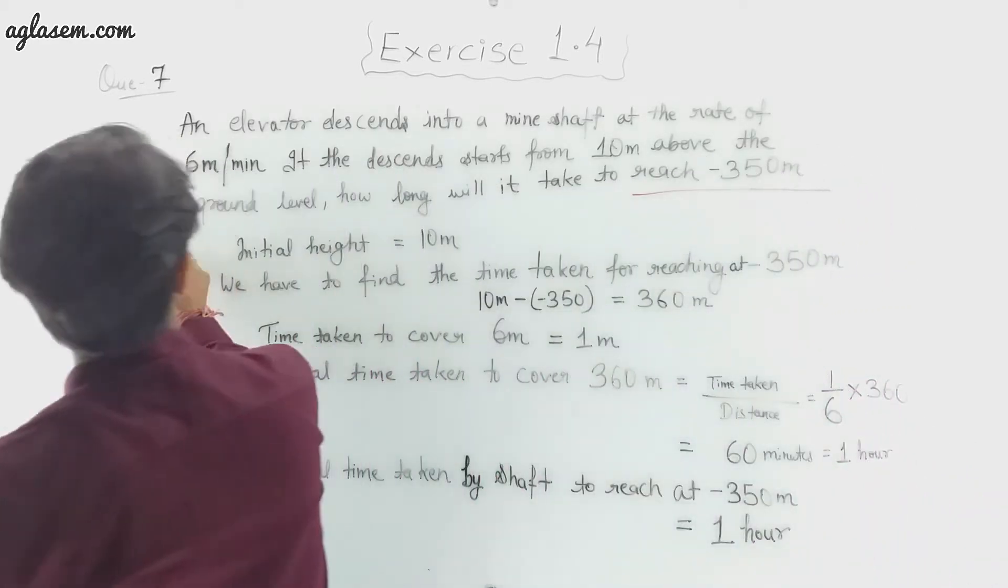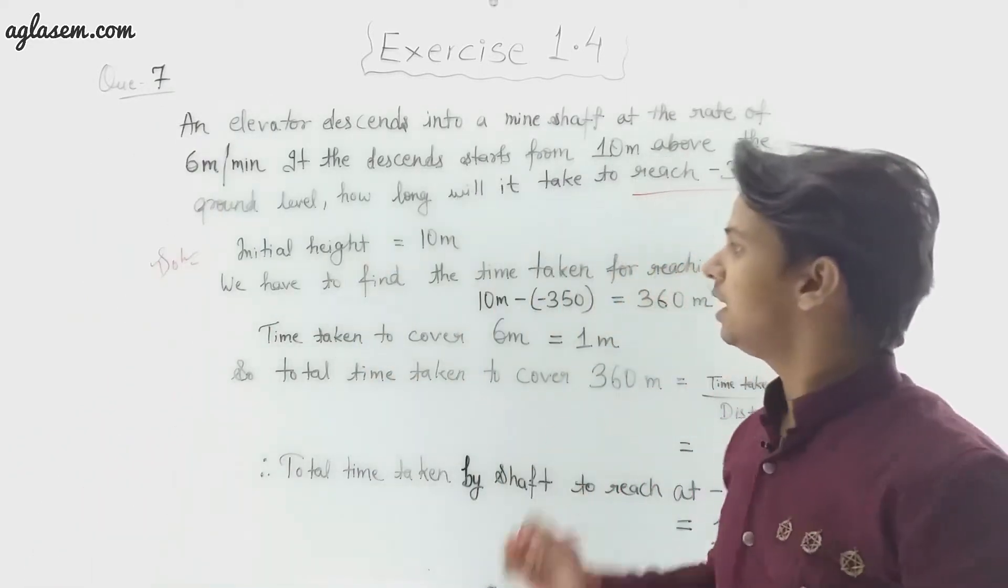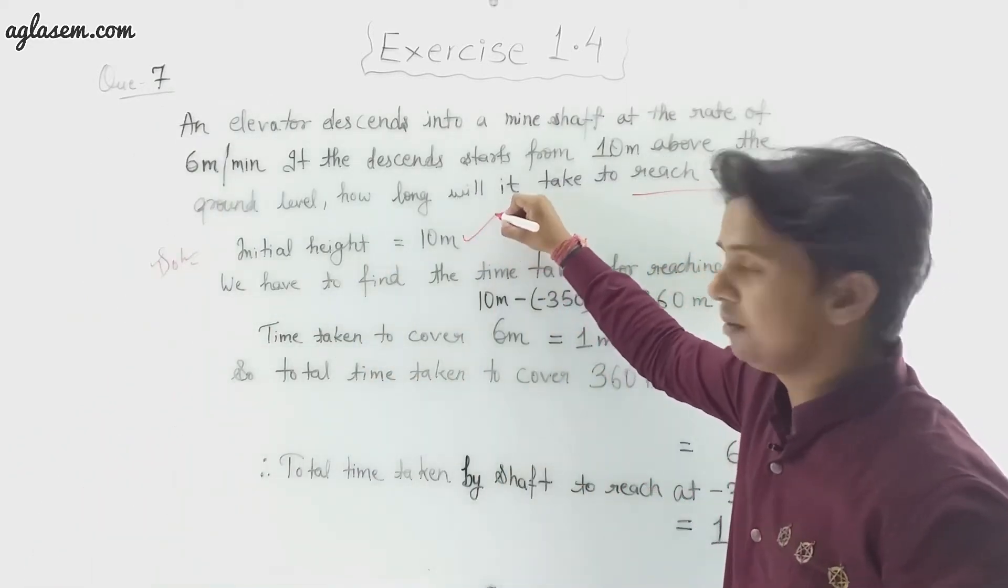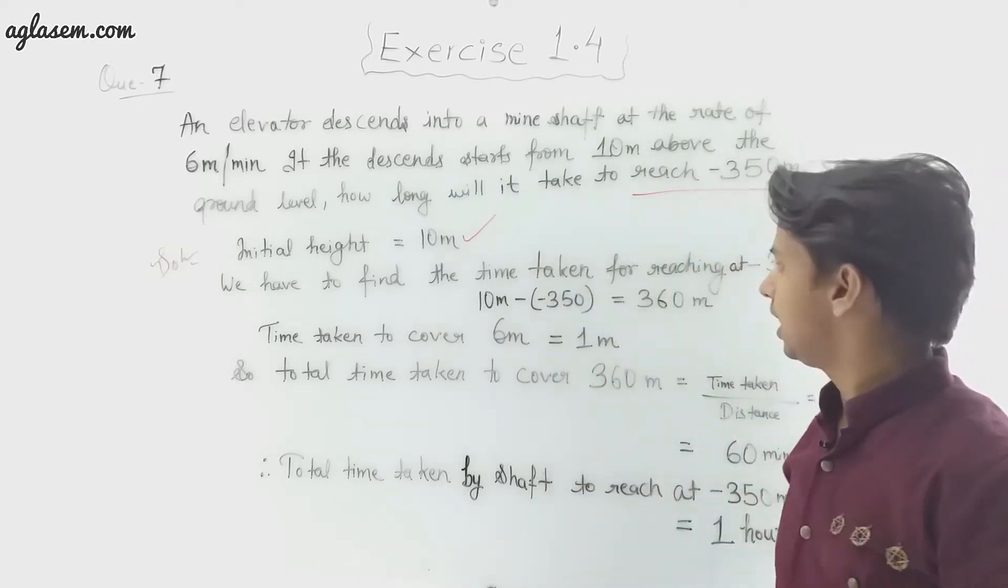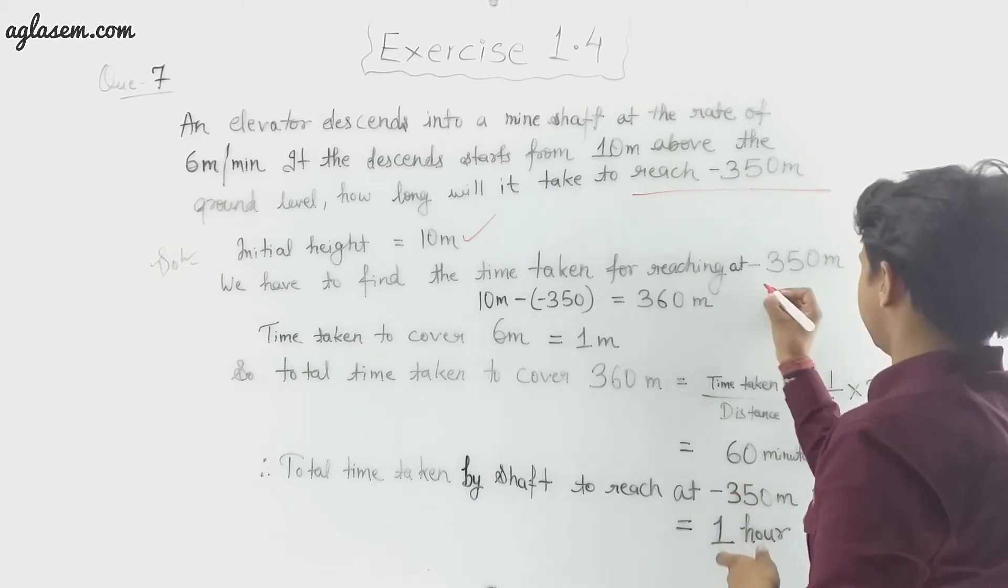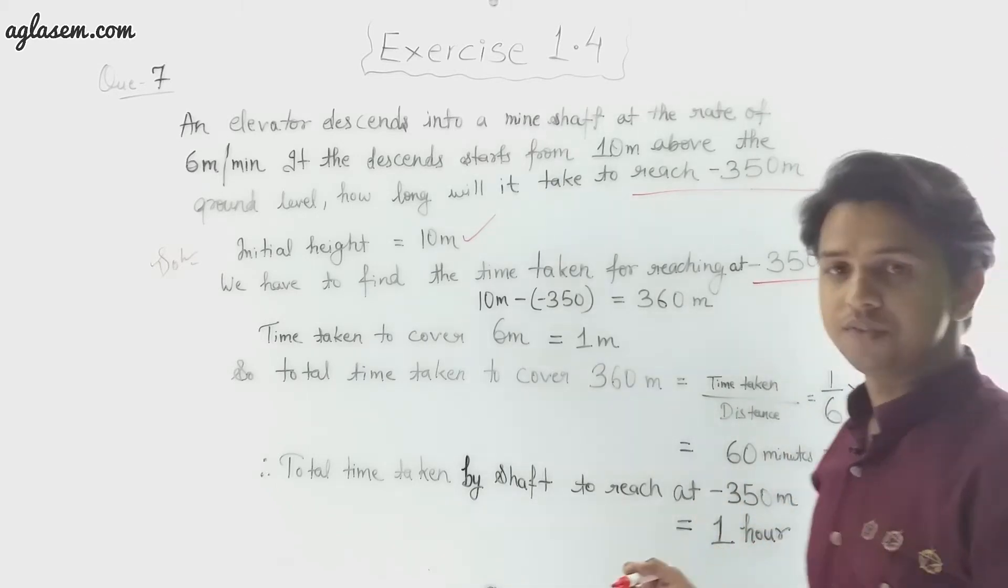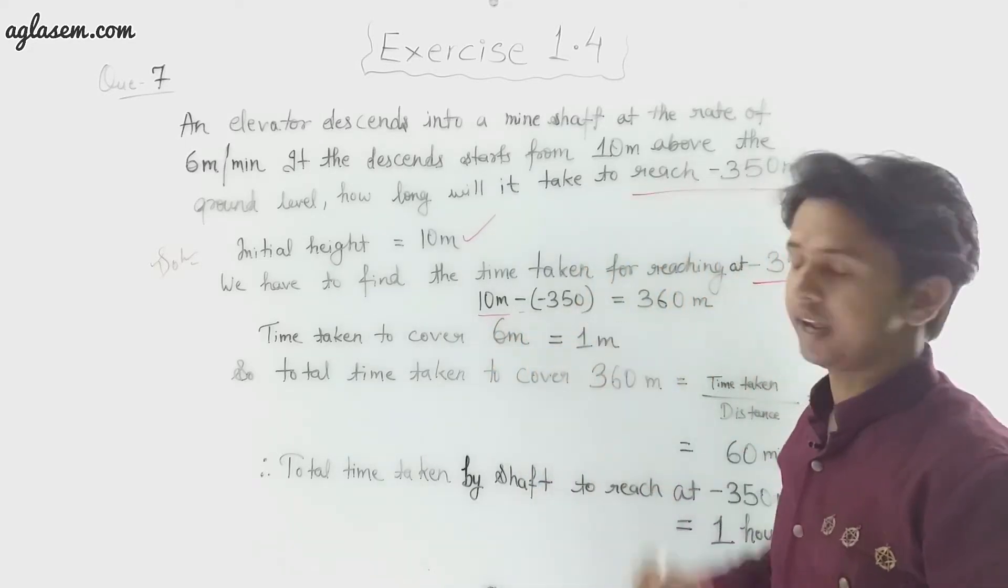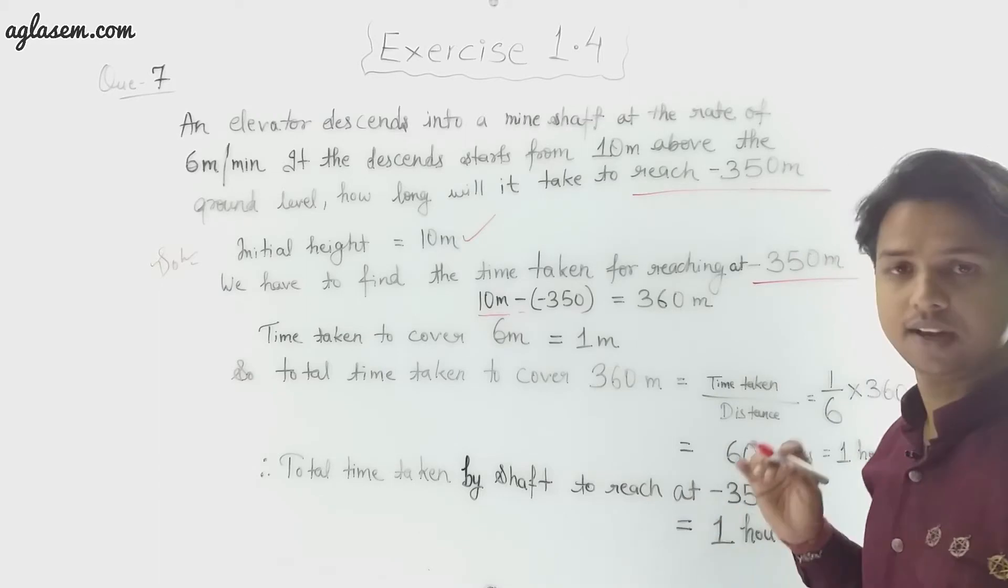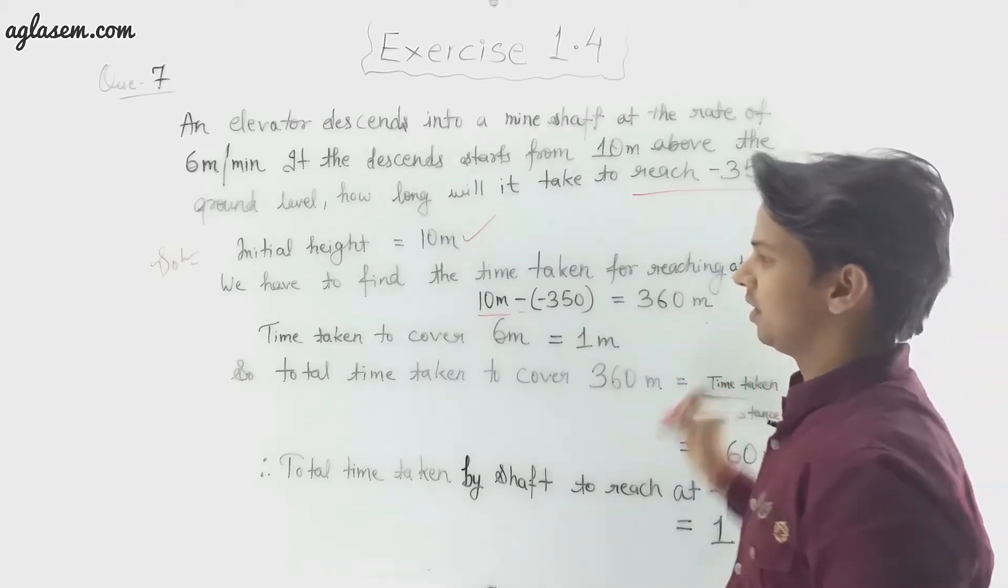Initial height is 10 meters, which is mentioned in the question. We have to find the time taken for reaching at -350 meters. So what we have to do is 10 meters - (-350 meters) = 360 meters.